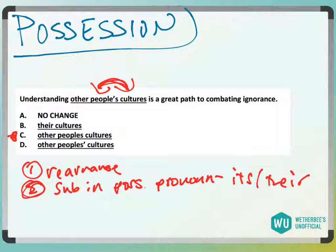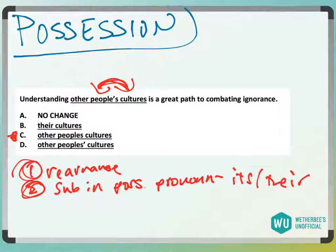"Understanding other people's cultures is a great path to combatting ignorance." If I said "the cultures of other people" — that works, so the rearrangement check passes. Subbing in the possessive pronoun: "understanding their cultures is a great path" — that also checks. So yes, it's going to be possessive, and I'm going to get rid of answer choice C.